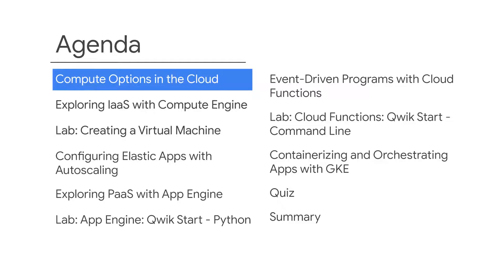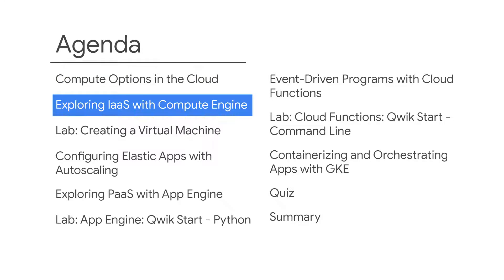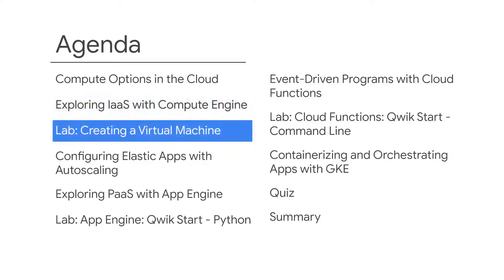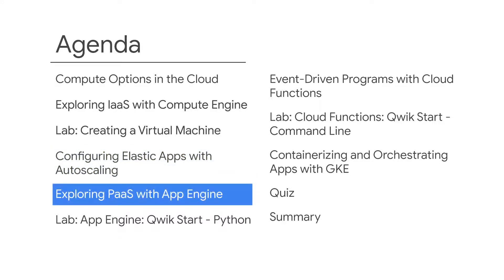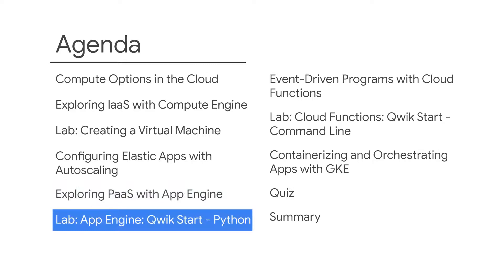You'll start by learning about compute options in the cloud. You'll then move on to finding out how to build and deploy apps using Compute Engine, and how to create a virtual machine by completing a hands-on lab. You'll then discover how to configure elastic apps with autoscaling, and explore how App Engine can run your applications without having you manage the infrastructure. The second lab of the module will allow you to create a small App Engine application that displays a short message.